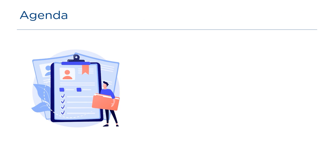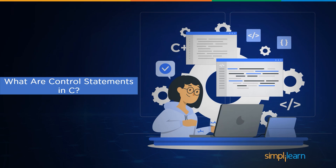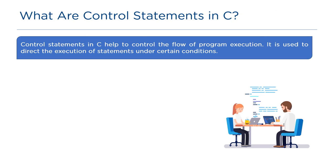Now let's get started with the agenda for today's session. First, let us start by understanding what are control statements in C, and then the types of control statements. Control statements in C help the computer execute certain logical statements and decide whether to enable the flow of control through a certain set of statements or not. They are also used to direct the execution of statements under certain conditions.